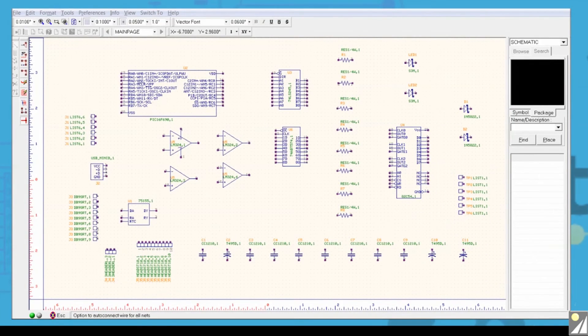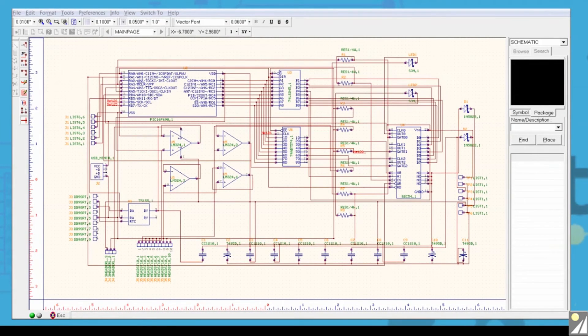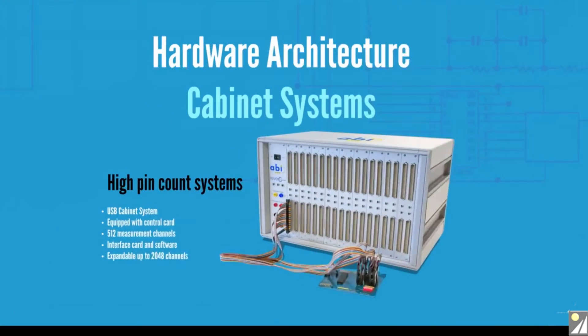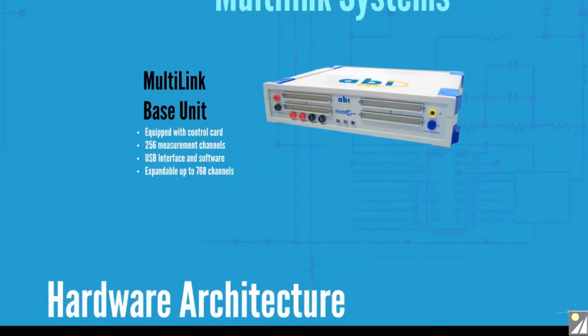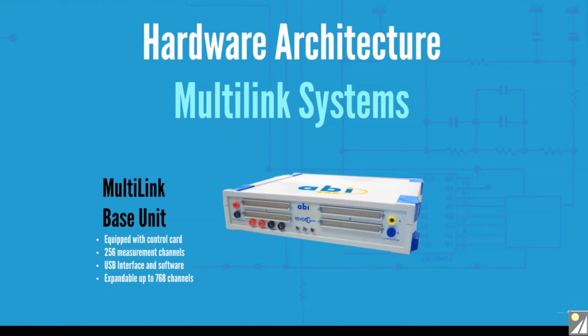Revenge from ABI Electronics is available in two hardware formats. The cabinet solution starts with 512 channels, but it's upgradable to 2048 channels for maximum performance in the least possible time. For smaller jobs and PCBs, the multi-link system starts with 256 channels and can be upgraded to 768 channels.